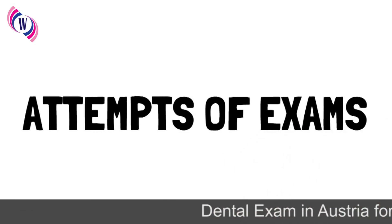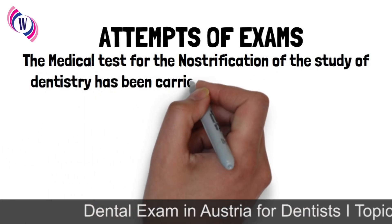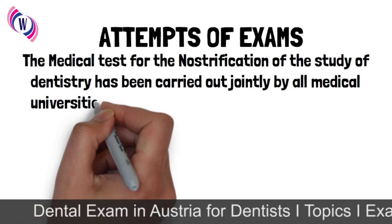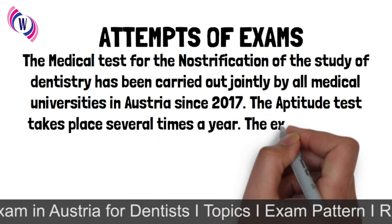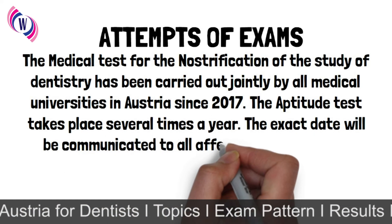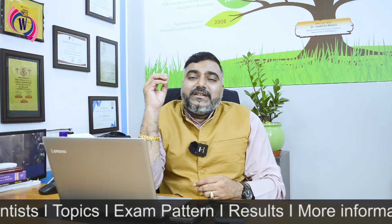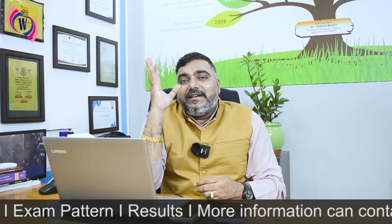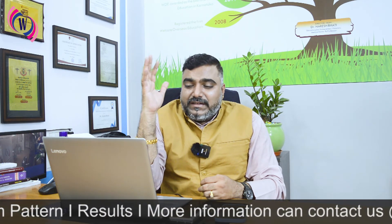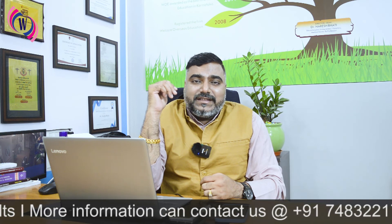Now, every dentist has multiple attempts. If you fail in the first attempt, what will happen? The medical test for the nostrification of the study of dentistry has been carried out jointly by all medical universities in Austria since 2017, and the aptitude test takes place several times a year. The exact date will be announced to affected nostrification applicants. You can get 2, 3 or 4 attempts yearly in Austria. You have to score at least 60% overall in your exam.